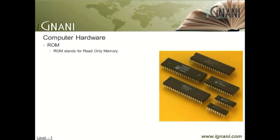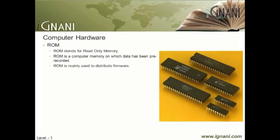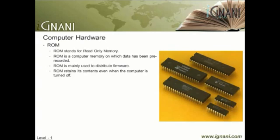ROM, acronym for Read-Only Memory, is a computer memory on which data has been pre-recorded. In this picture you can see typical ROM chips. Once data has been written onto a ROM chip, it cannot be removed and can only be read. ROM is mainly used to distribute firmware — software that is specific to the hardware. Unlike RAM, ROM retains its contents even when the computer is turned off; ROM is referred to as non-volatile, whereas RAM is volatile. Most computers contain a small amount of ROM to store the boot program. Booting is the process of loading the first piece of software for starting a computer. A variation of ROM is a PROM, Programmable Read-Only Memory — PROMs are manufactured as blank chips on which data can be written. For a detailed tutorial on ROM, please check out our tutorial on the same.